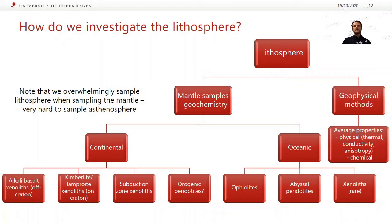In terms of mantle samples, we're mainly going to be using geochemistry to investigate them. From continental crust, you can get xenolith samples in alkali basalts — these tend to be off-craton, so in younger lithosphere. On cratons, or erupting through older or thicker lithosphere, you tend to get kimberlites or lamproites. There are also some subduction zone xenoliths, though I'm not really going to talk about them. And finally, orogenic peridotites — I've put a question mark here because there's a bit of a dispute as to what orogenic peridotites actually represent.